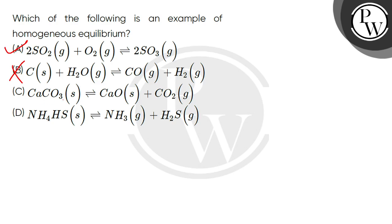In option C, CaCO3 is solid, CaO is solid, but CO2 is gas. Again, there are two types of phases present, so this is also heterogeneous.